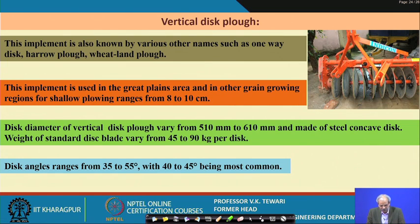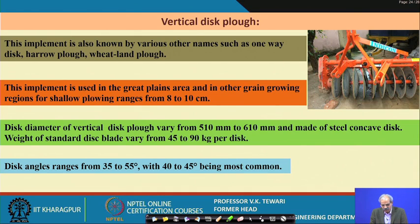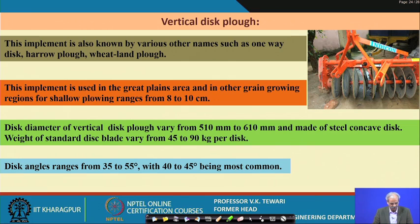Vertical disc implements are not widely used here. We use harrows, which are implements used with very large equipment and are common in other parts of the world. Several discs are arranged at disc angles ranging between 35 to 55 degrees.